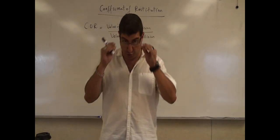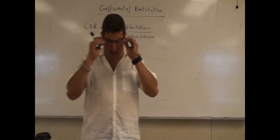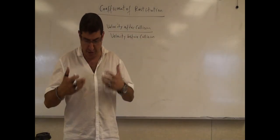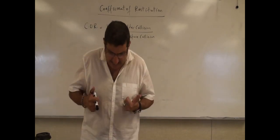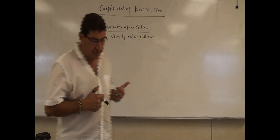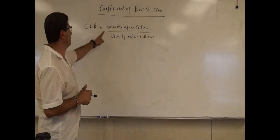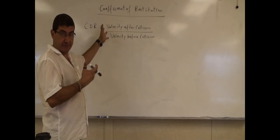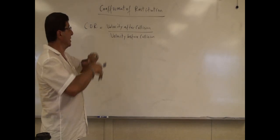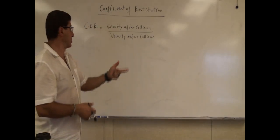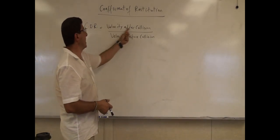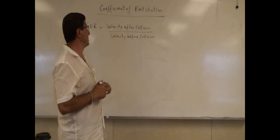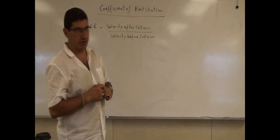The coefficient of restitution — we can read about it on Wikipedia. It's defined as the relative velocity of a ball or some other object upon collision with another object: the velocity after collision divided by the velocity before collision.